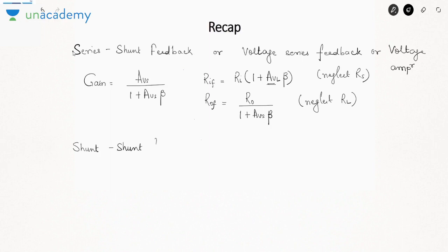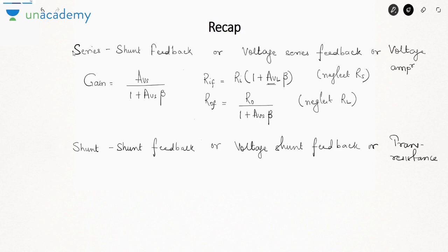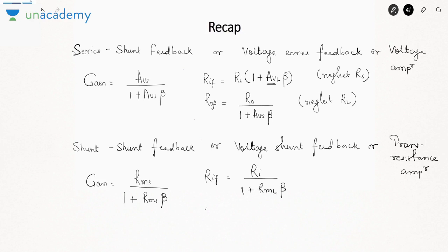The second configuration we covered was shunt-shunt feedback, also called voltage shunt feedback or transresistance amplifier — a current controlled voltage source. Here the transresistance becomes Rms over 1 plus Rms·β. The input resistance becomes Ri over 1 plus Rml·β due to shunt connection, and the output resistance also reduces because we have shunt connection at the output as well.